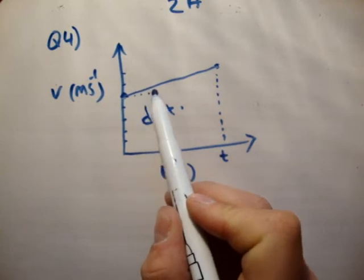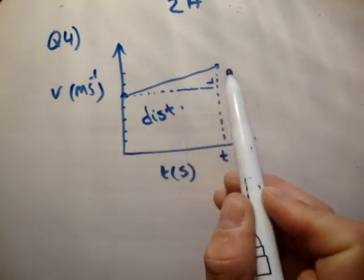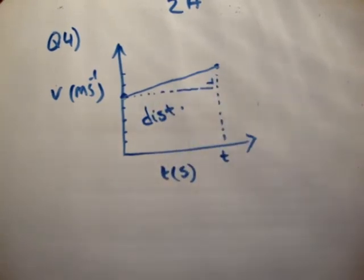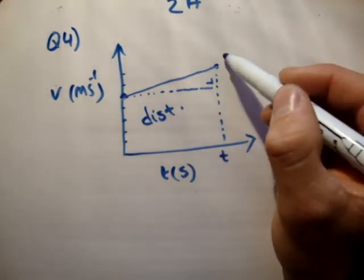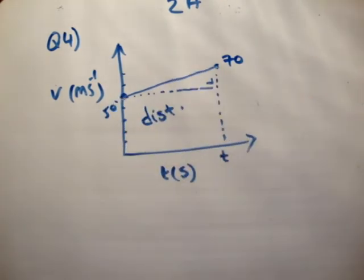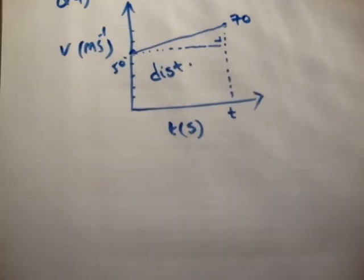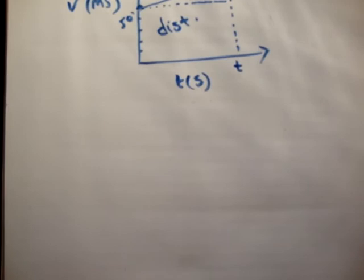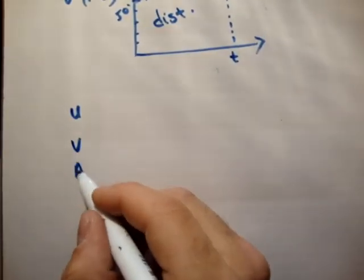So how would you get the area? You'd notice that this here is a triangle and you'll be able to get the area of your triangle and the area of your rectangle and add them together. Anyway, we know that this point here is at 70 and this one here is at 50. I'm going to try and use the U-V-A-S-T formula.